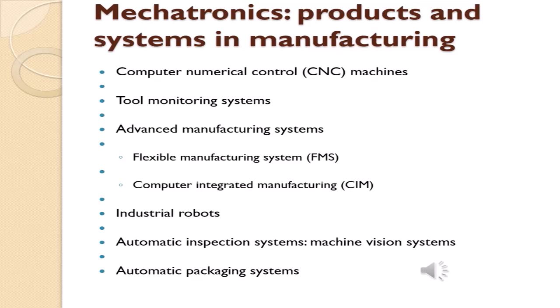Industrial robots are used in many household and commercial applications — for welding and even serving food in hotels. Automatic inspection systems and machine vision systems are used; for example, in a bottling company, the level of the product is checked. Packaging systems use palletizers and laminating machines for products like half-liter containers. These are all applications of the mechatronic system.